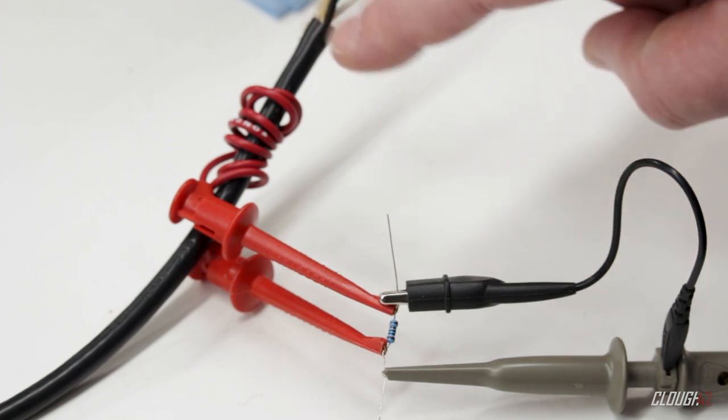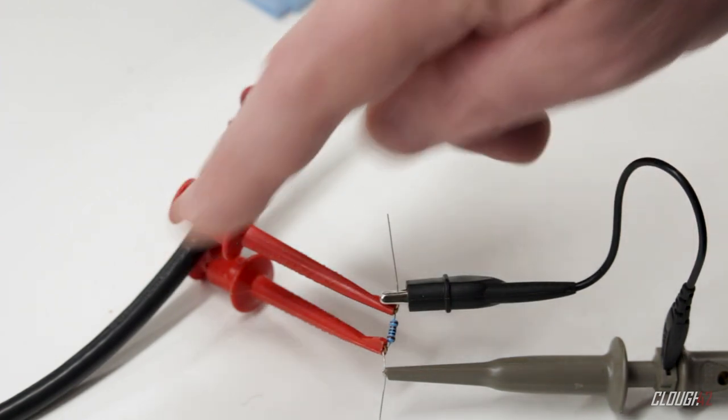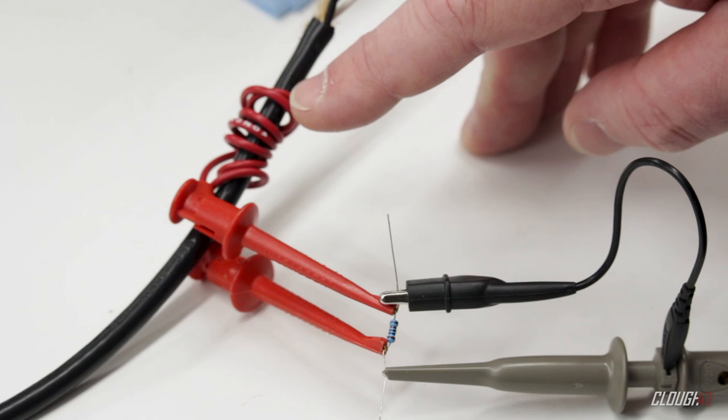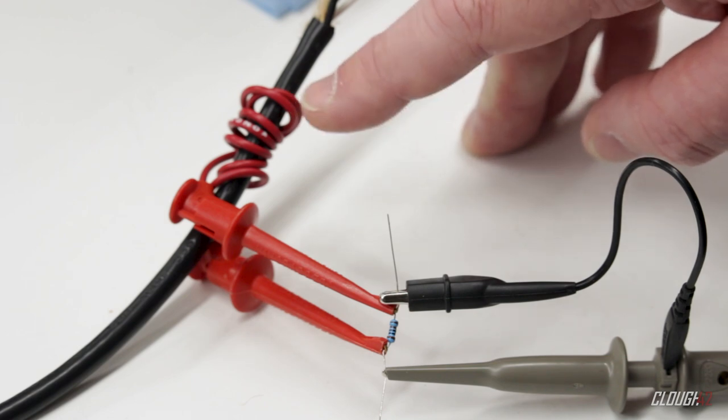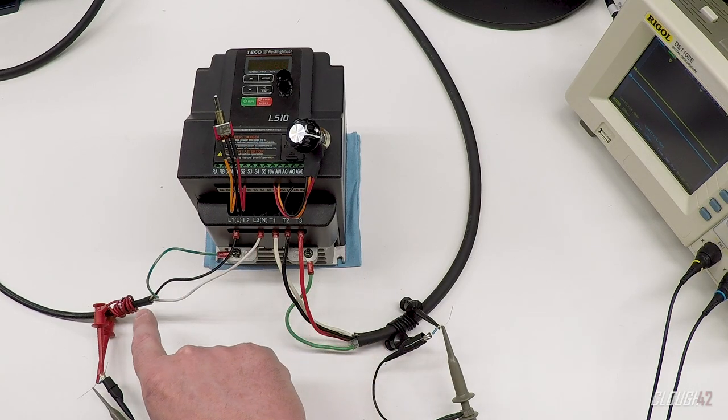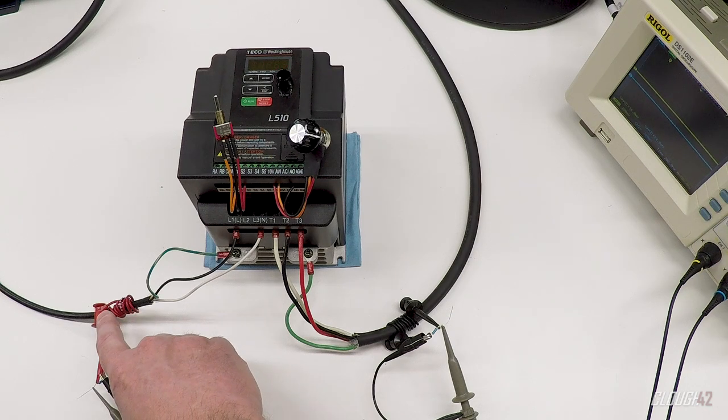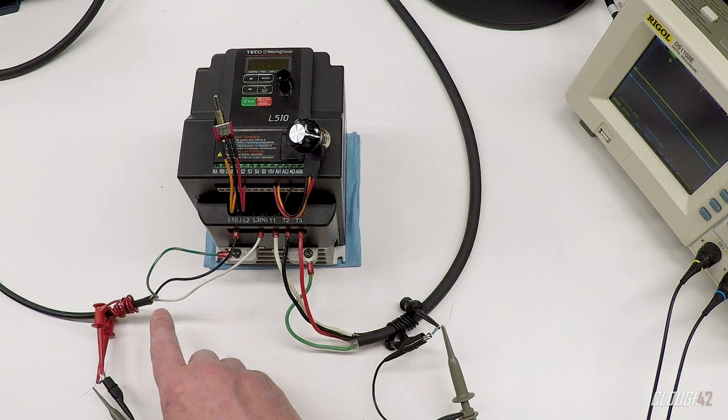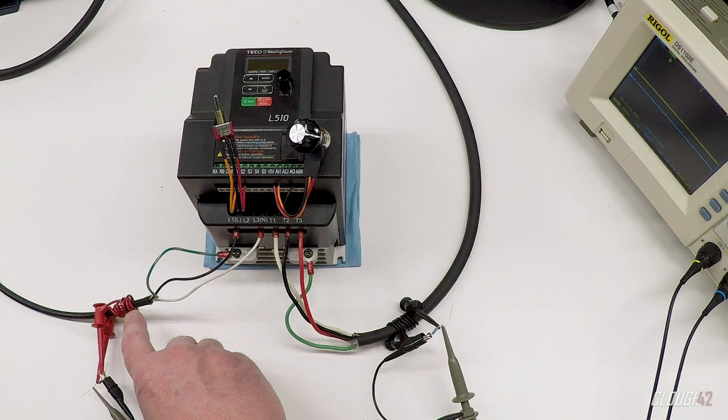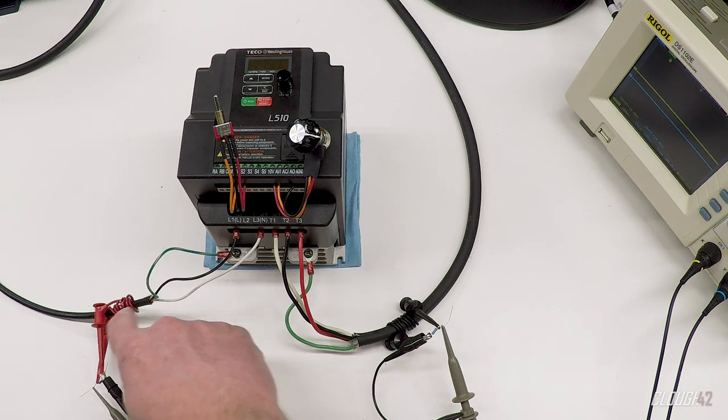Now the current flowing through the line cord here produces an electromagnetic field. And this coil of wire wrapped around it forms a transformer that induces a current in that coil from the magnetic field that's in this cable. Now because the hot and neutral lines are both inside the cable, we're only measuring the net magnetic field and the net current. The power that's actually going to the motor cancels out. So we shouldn't see that current in the current transformer. We should only see the noise current or the common mode current that's being transmitted back up this cable.